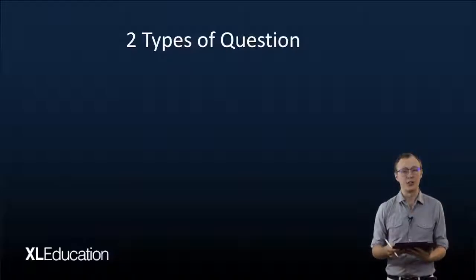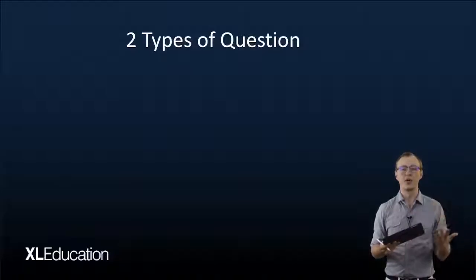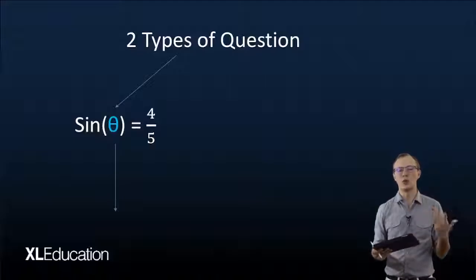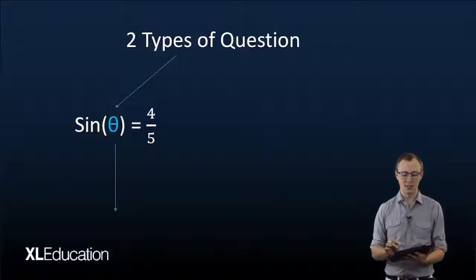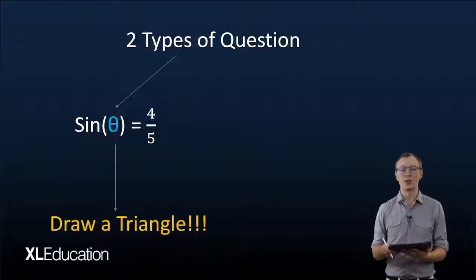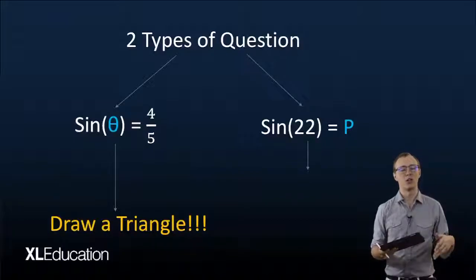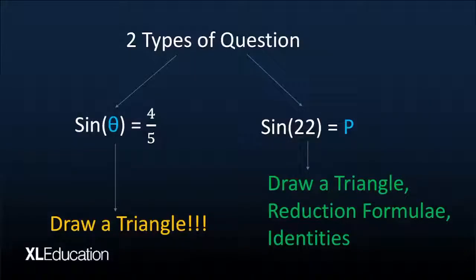There are two types of questions that they ask in this no-calculator section. The first one is when you are given an unknown angle like theta and it's set equal to a ratio like 4 over 5 — when you have this, draw a triangle in order to solve the question. The second type is when you have a known angle like 22 that is equal to an unknown like p, q, or p over q. Your strategy here is to draw a triangle, but you can also use reduction formulae or identities to solve these problems.